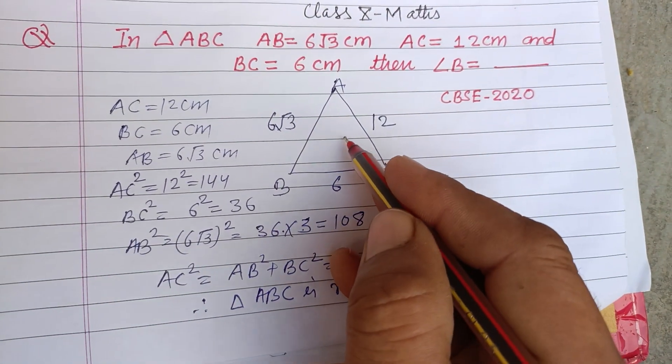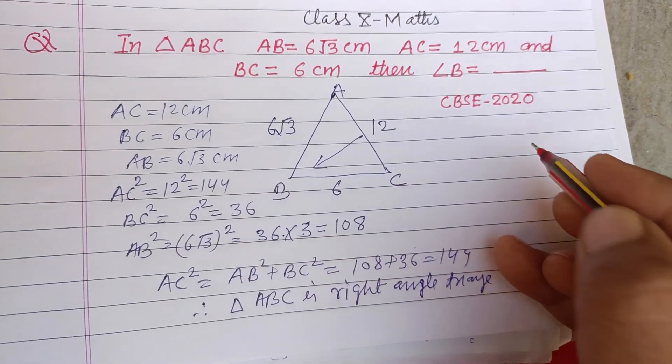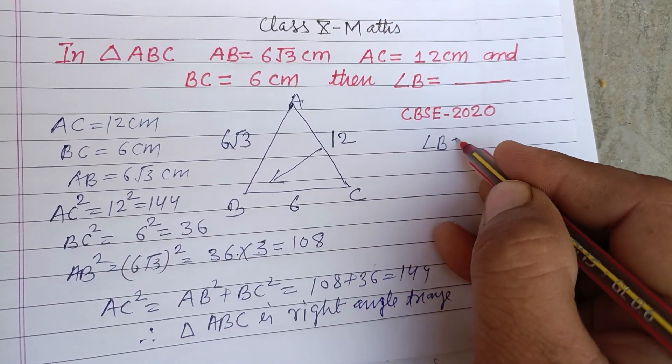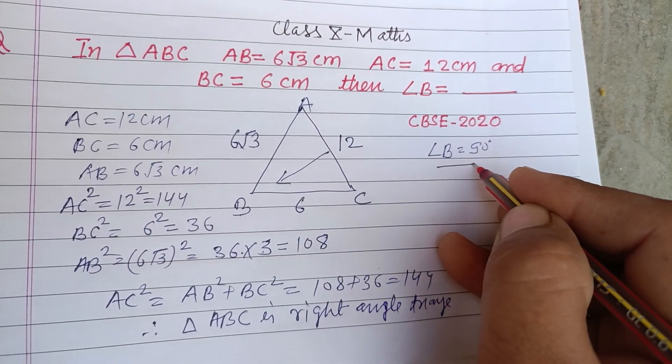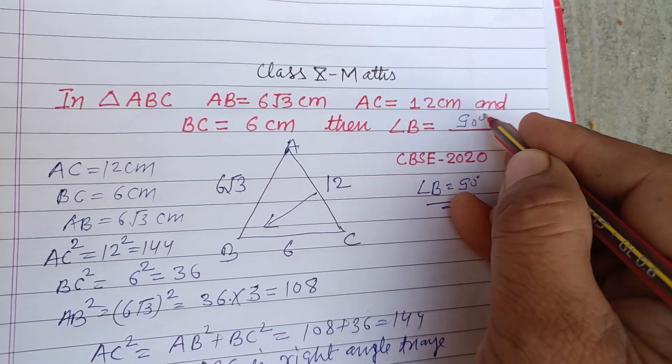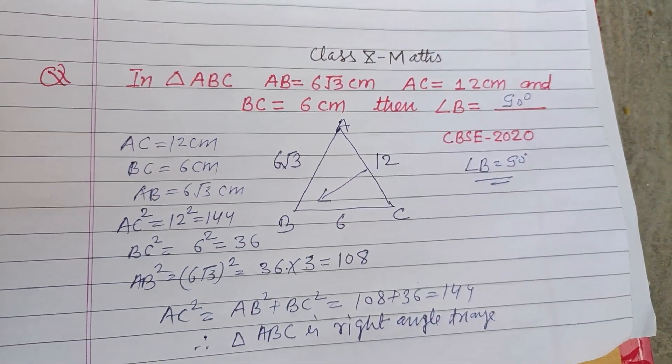And hypotenuse is opposite to angle B. Therefore angle B is 90 degrees. So the answer to this question is 90 degrees. I hope you got it.